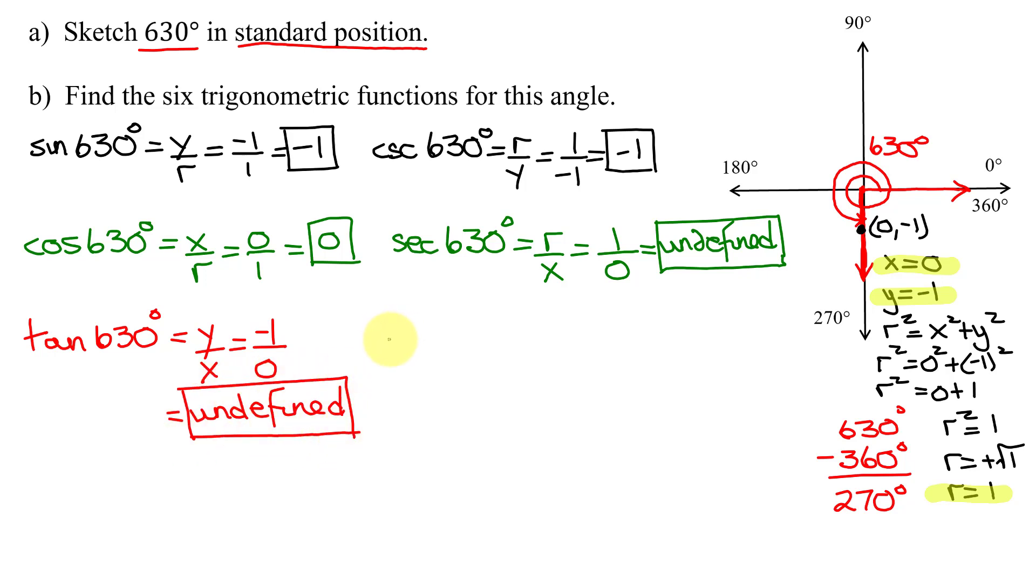And finally, the cotangent of 630 degrees, that's the reciprocal of this fraction, so it's x over y. x is 0, y is negative 1, 0 divided by negative 1 is 0. So the cotangent of 630 degrees is 0. So I've now found all six trigonometric functions for this angle.